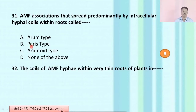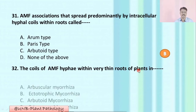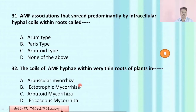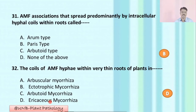Question number thirty-two: The coils of AMF hyphae within very thin roots of plants occur in — A: arbuscular mycorrhizae; B: ectotrophic mycorrhizae; C: arbitrary mycorrhizae; D: ericoid mycorrhizae. The correct option is D: ericoid mycorrhizae.